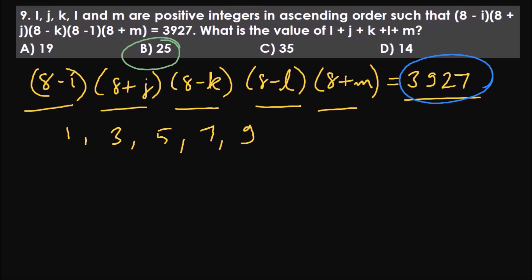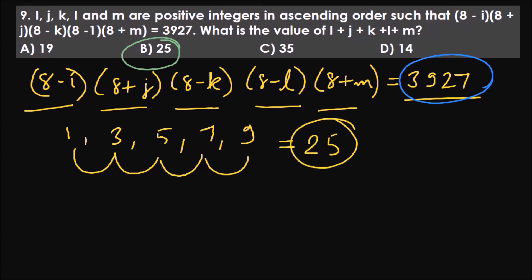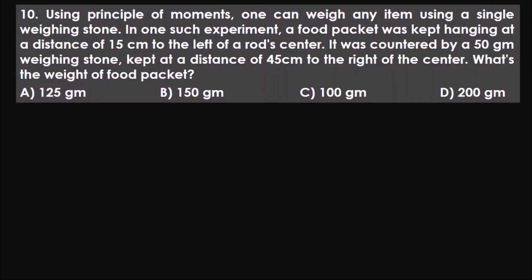So the answer is 25 — a little bit of trial and error is required here. This is the last question of the video. Take your time, pause and try to solve it. The answer is B, 150 grams. Using the principle of moments, one can weigh any item using a single weighing stone.